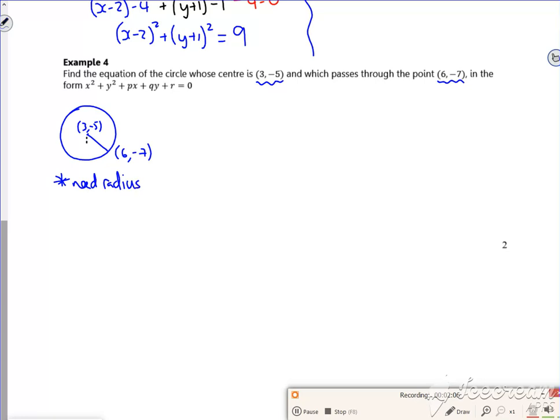So if I look at a little triangle here, the x value goes from 3 to 6, so it's 3 across. The y value goes from minus 7 to minus 5, so it's 2.